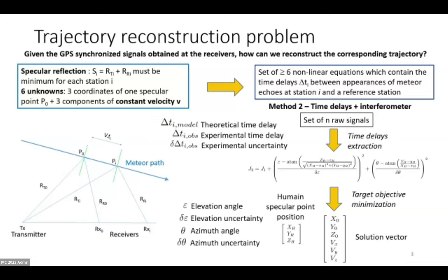This is method one, using the time delays only. There is also method two, which combines the knowledge of the time delays with the interferometric data from our interferometer. Simply, we use the same target objective and complement it with two extra terms coming from the knowledge of the elevation angle and the knowledge of the azimuth angle. We have two approaches, but the issue is that the second approach is not valid for every meteor because it's only valid for meteors which pass next to the interferometer.